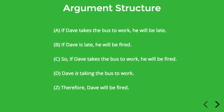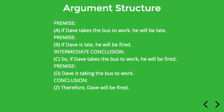Let's look at some more examples to illustrate these concepts. Here's a very simple argument, slightly longer than the others but still pretty simple. If Dave takes the bus to work, he'll be late. If Dave is late, he'll be fired. So if Dave takes the bus to work, he'll be fired. Dave is taking the bus to work, therefore Dave will be fired. Let's break this argument down using the concepts we just introduced.